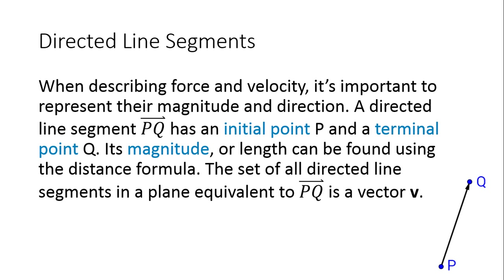Everybody see that on their paper? It's not a full-size arrow — it's a half arrow. The initial point is P, always listed first. The terminal point is where you're going to — that's Q. So starting from P, the arrow goes to Q. That's our directed line segment: a segment with an arrow on one end indicating its direction.